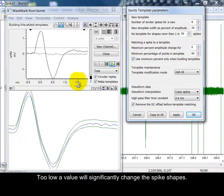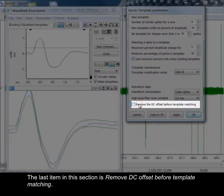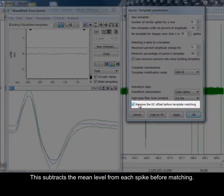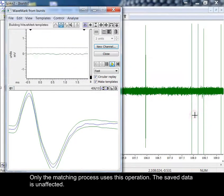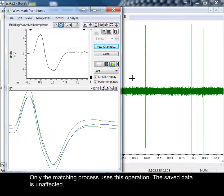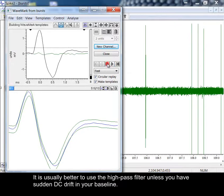Too low a value will significantly change the spike shapes. The last item in this section is remove DC offset before template matching. This subtracts the mean level from each spike before matching. Only the matching process uses this operation. The save data is unaffected. It is usually better to use the high pass filter unless you have a sudden DC drift in your baseline.